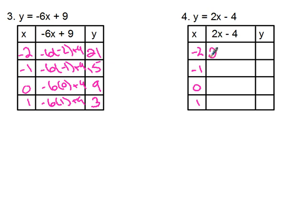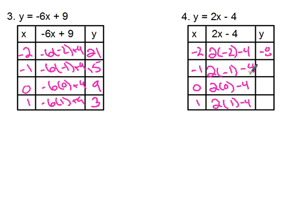For the second equation: two times negative two minus four; two times negative one minus four; two times zero minus four; two times one minus four. Solving: negative four minus four is negative eight; negative two minus four is negative six; zero minus four is negative four; and two minus four is negative two. That's how you create a function table.